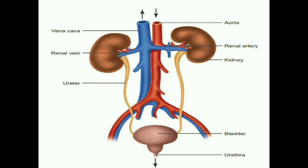The ureters are a pair of whitish, narrow tubes which open from both kidneys to the urinary bladder — in other words, the ureter connects the kidney to the urinary bladder. The urinary bladder is a bag which stores urine for some time. The urethra is a tube through which urine is passed out from the body.